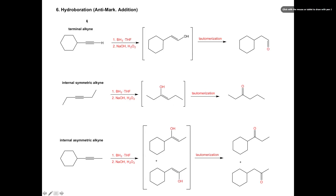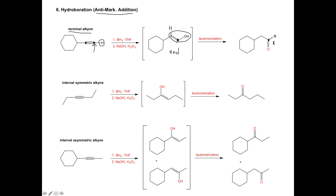The next reaction is hydroboration. Remember this gives us anti-Markovnikov addition of an OH. We're going to break a pi bond — we have two pi bonds, so that leaves us with one pi bond — and we're going to add an OH to the anti-Markovnikov position. Here we've added an OH to the anti-Markovnikov side and H to the other side. We've formed an enol again, so this reaction will again undergo tautomerization. Because this was a terminal alkyne, we've now tautomerized to have our C=O at the carbon on the right, and we form an aldehyde. When you start with a terminal alkyne, the product you're going to get is an aldehyde because of anti-Markovnikov addition.